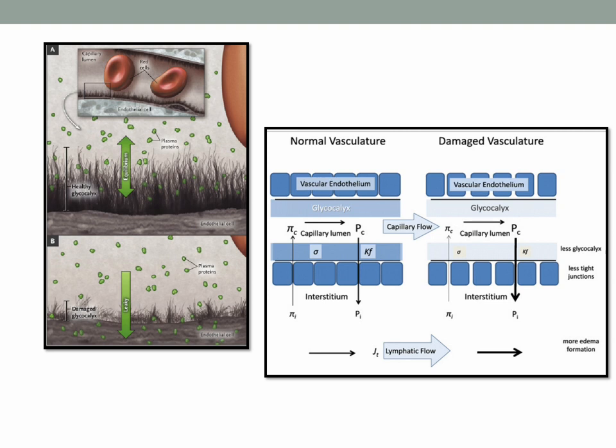During sepsis or any other inflammatory processes, there is damage to the glycocalyx, and that leads to protein effluxing from the capillary. This affects the oncotic pressure, leading to a net movement of fluid from the capillary to the interstitial spaces.